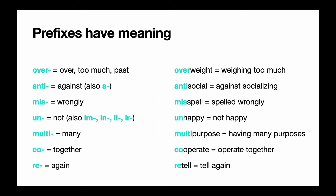So prefixes and suffixes can help us understand new words or words that we already know. 'Over' is a prefix that means over, too much, or past something. So the word overweight means weighing too much or too heavy. 'Anti' means against. So antisocial means you are against socializing — maybe you would rather be alone.